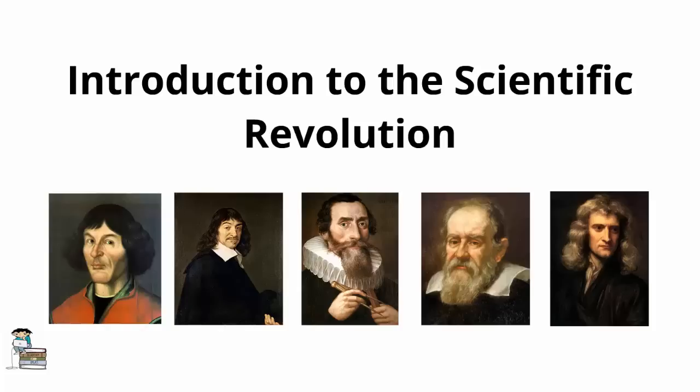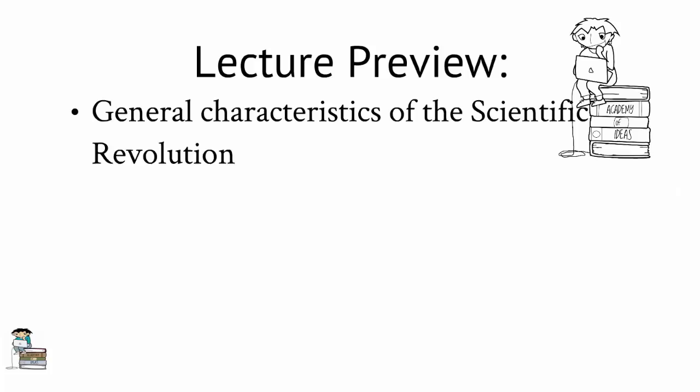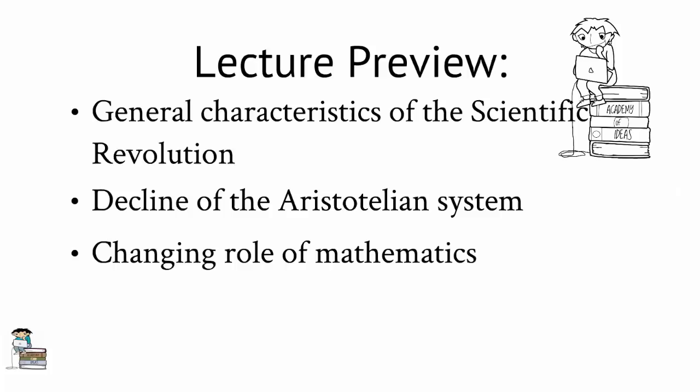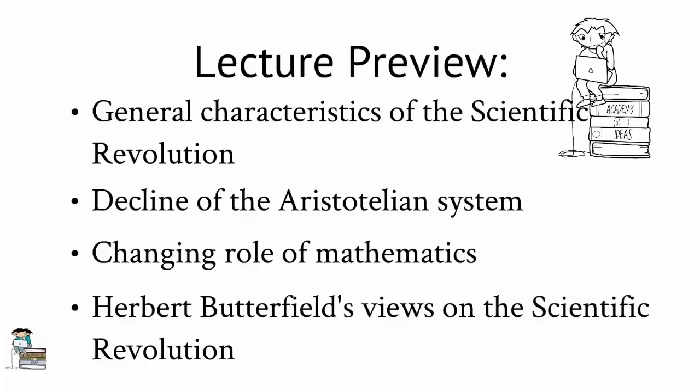In this lecture we will overview some of the general characteristics of the Scientific Revolution, and then look at how science changed during this period, concentrating on the movement away from the Aristotelian view of nature and the accompanied increase in the use of mathematics to describe the workings of nature. We will also discuss the famous historian Herbert Butterfield's influential views on the impact of the Scientific Revolution.